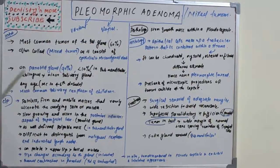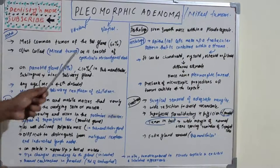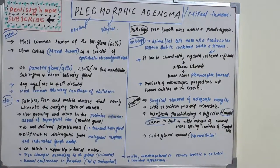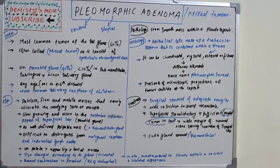It is also known as mixed tumor because it consists of both epithelial and mesenchymal elements of the salivary gland. Let's get into the details of pleomorphic adenoma.